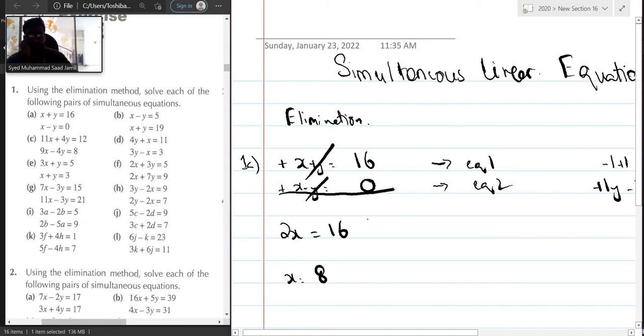Now since you have found out the value of x, plug in the value of x either in equation 1 or equation 2. It depends on you. Both will give you the same answer. We are plugging in the value of x to find the value of y. So let's use equation 1: x plus y is equal to 16. So instead of x write 8 plus y is equal to 16. y is equal to 16 minus 8, and y is equal to 8. That's how you are going to solve question 1 part a.